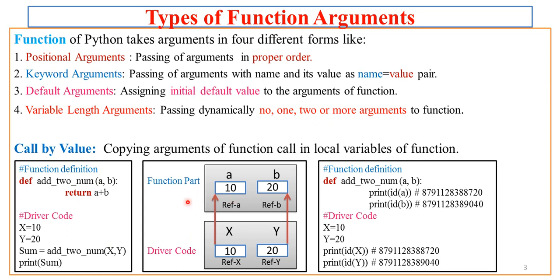I have explained this in the form of a figure. Focus on the second rectangle of this slide — the function part and the driver code. In the driver code, x and y hold values 10 and 20 respectively, and are stored at references x and y. When the function is called, x and y are passed to the function as parameters a and b — the value of x is copied to a, and the value of y is copied to b. Since a and b are local to the function, they are not accessible outside it and will not impact any variables outside the function.